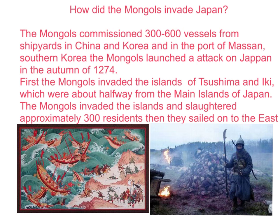The Mongols commissioned 300 to 600 vessels from the shipyards in Korea and the port of Masan, southern Korea. The Mongols launched an attack on Japan in the autumn of 1274. First, the Mongols invaded the islands of Tsushima and Iki, which were about halfway between the mainland of Japan and southern Korea. The Mongols slaughtered approximately 300 residents and then sailed on to the east.